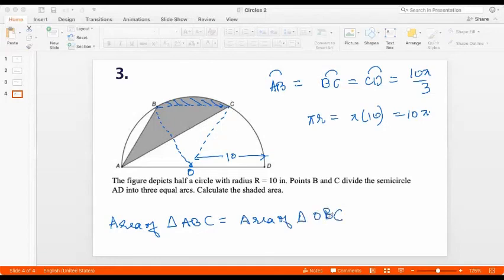So area of triangle ABC is the same as area of triangle OBC. And so the entire shaded area, which means the area of the gray portion is basically the area of sector OBC, right? Because that will include that blue shaded area as well.